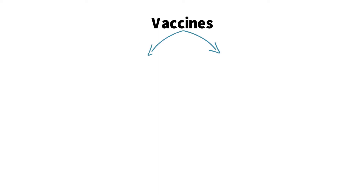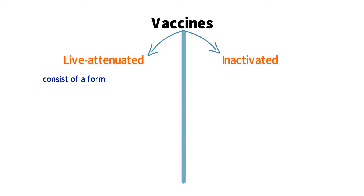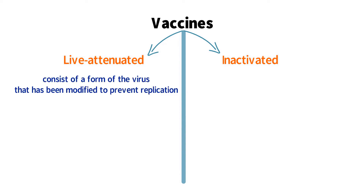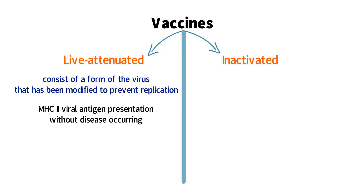Traditionally, vaccines have taken the form of live attenuated or inactivated. Live attenuated vaccines consist of a form of the virus that has been modified to prevent replication. Injecting this modified form of the virus can lead to MHC-2 viral antigen presentation without disease occurring. The main challenge in producing live attenuated vaccines is how labor intensive and time consuming it is to modify the virus so that it will not replicate.